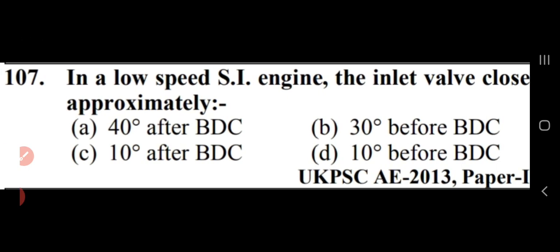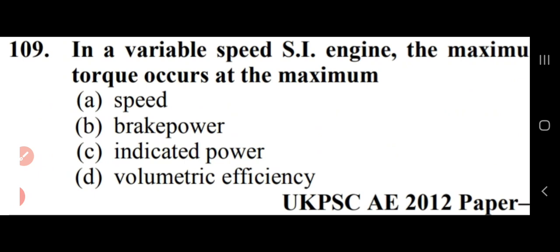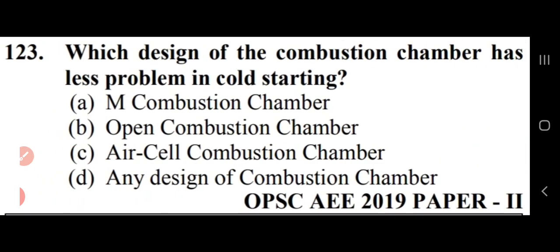In a variable speed SI engine, the maximum torque occurs at maximum brake power — option B. Which design of the combustion chamber has less problem in cold starting? The M combustion chamber has less problem in cold starting — option A.